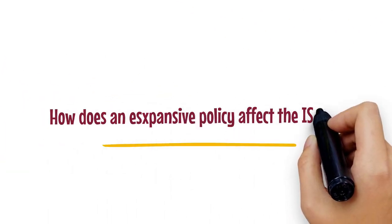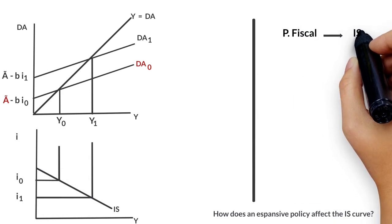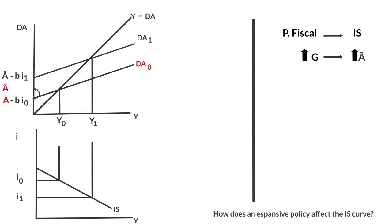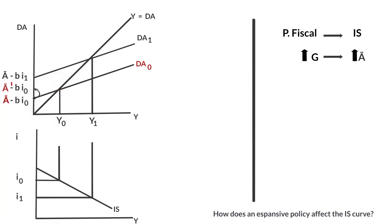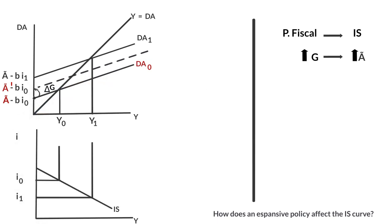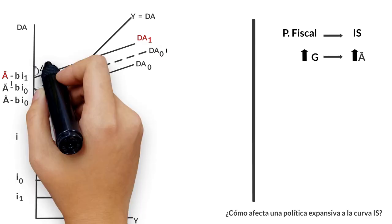How does an expansive policy affect the IS Curve? Starting from an initial IS Curve, we can observe the effect of a fiscal policy. Suppose an increase in public expenditure that has a direct effect on autonomous expenditure A. Given an initial aggregate demand curve, the increase in public expenditure induces an upward parallel shift of the curve on the vertical axis to (A prime minus B·I₀), and the curve shifts upward to a new aggregate demand sub zero prime. Similarly, the aggregate demand sub one increases by the same value.